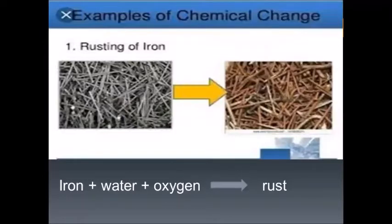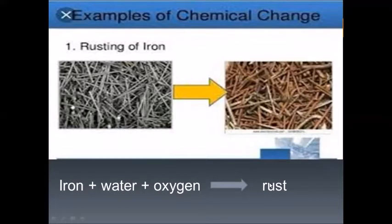Rusting is a slow chemical change. With the help of water, the iron and oxygen gas from the air change to rust. The rust is a different kind of matter and it will not change back into iron and oxygen.